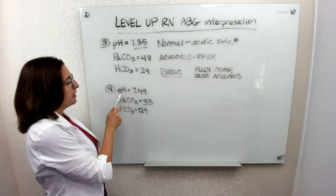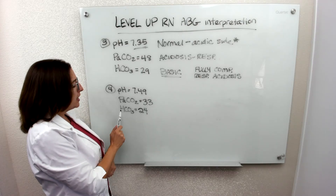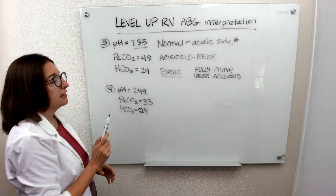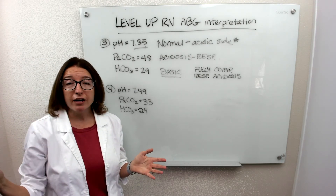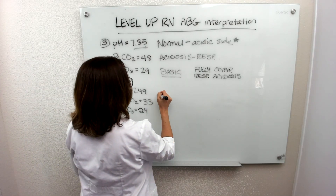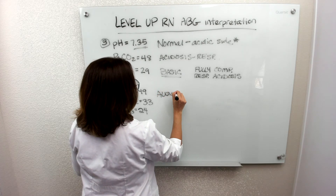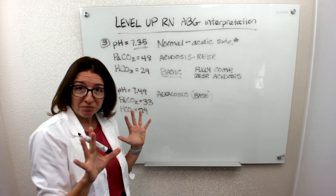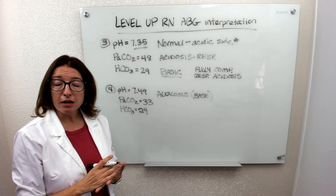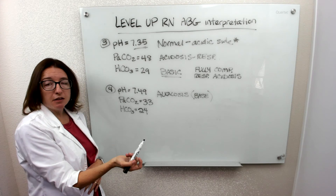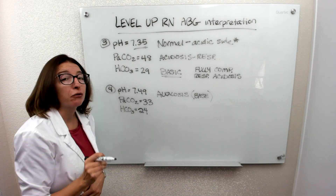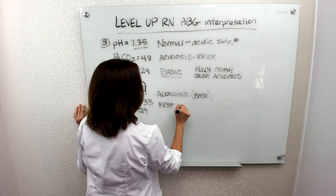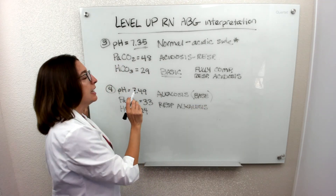Problem 4: pH is 7.49, PaCO2 is 33, HCO3 is 24. First, let's determine if we have acidosis or alkalosis. pH should be between 7.35 and 7.45; it is out of range on the high side, which means we have alkalosis. Now let's see who's to blame. PaCO2 represents the respiratory system and should be between 35 and 45; it is 33, out of range on the low side, which means we have respiratory alkalosis. So the respiratory system is to blame for the alkalosis.